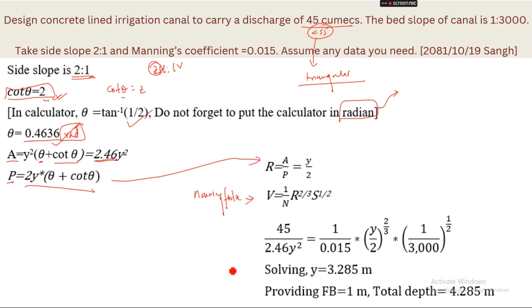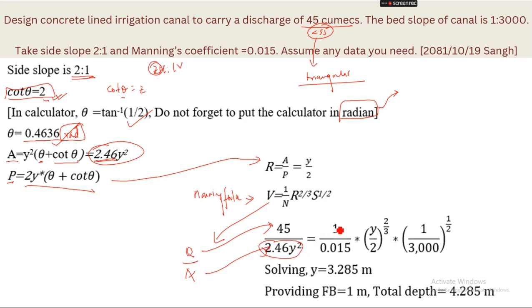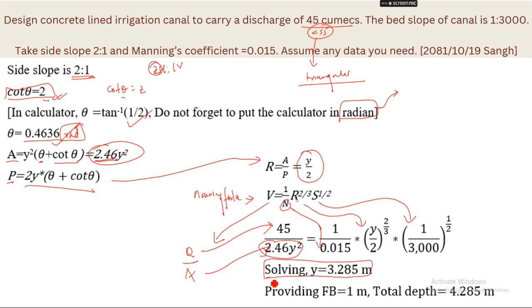From Manning's formula, V = (1/n) · R^(2/3) · S^(1/2). Also V = Q/A. Substituting: Q/A = (1/0.015) · (y/2)^(2/3) · (1/3000)^(1/2), with A = 2.4636y² and Q = 45. Solving this in a calculator gives y = 3.285 meters.